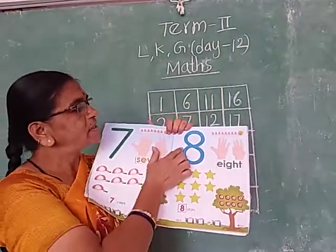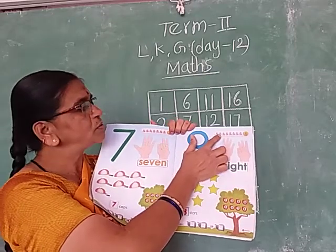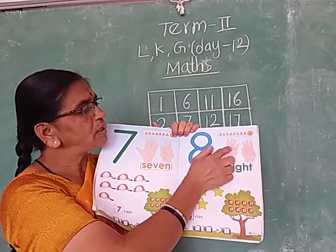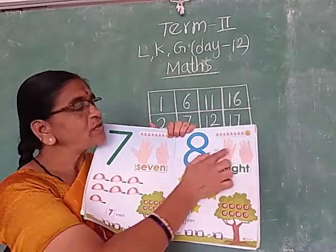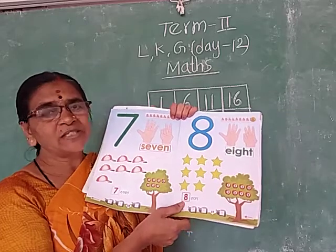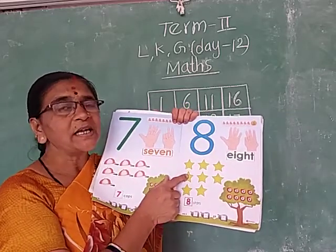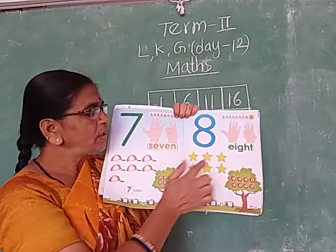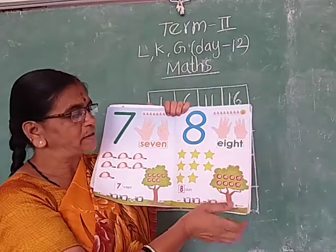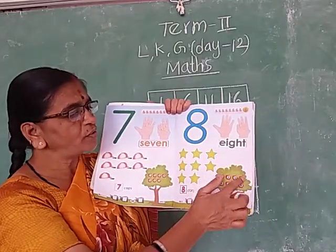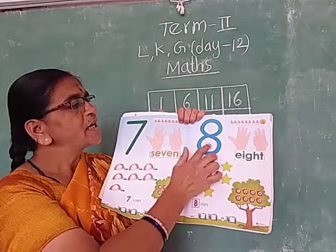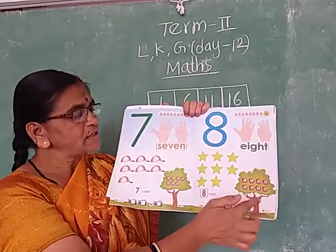Next number is 8. How many butterflies are there? Count: 1, 2, 3, 4, 5, 6, 7, 8 — 8 butterflies. 1, 2, 3, 4, 5, 6, 7, 8 — 8 fingers. What are these? These are stars. This star is in yellow color. 1, 2, 3, 4, 5, 6, 7, 8 — 8 stars. Now count the apples: 1, 2, 3, 4, 5, 6, 7, 8 — 8 apples.